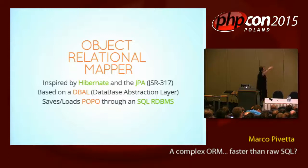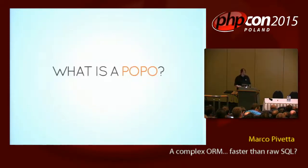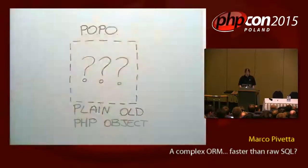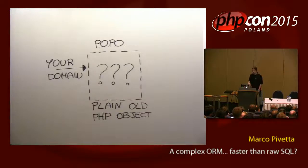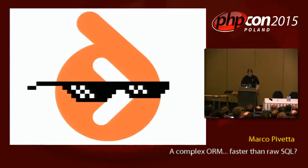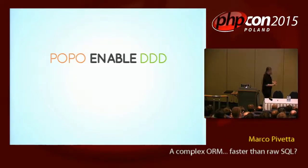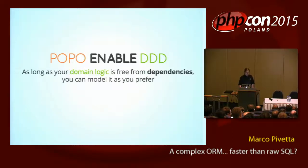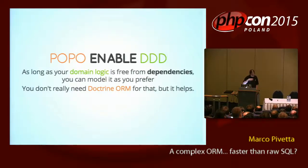It saves and loads something called POPO through SQL. So what is the plain old PHP object? POPO — PHP plain object. That is pretty much something that you designed in your application. There is your logic, your decisions in there. What we do is we take this object, we push it somewhere else, and Doctrine deals with it. The idea is that if you code like this, your plain old PHP objects enable you to do something called domain-driven development. It makes it easier. The idea is that your code is free of any frameworks and stuff like that. You just put it in later.